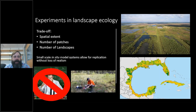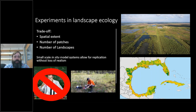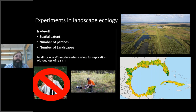In any of these experiments there's an inherent trade-off on the spatial extent you can study. In the Amazon, it's very large but it's hard to count species or individuals over that extent. Also, the number of patches you can visit — the Amazon project only had about 20 different patches. And finally, the number of landscapes: it's really hard to do these experiments across a vast number of landscapes. For my dissertation, I used a model system operating at a small scale but still in its in-situ wild state to get large replication of landscapes without the loss of realism seen in microarthropod studies.